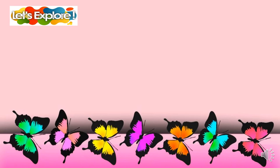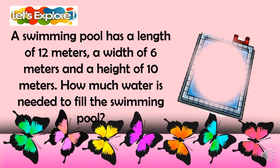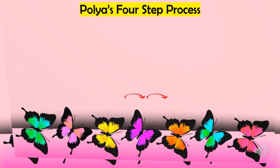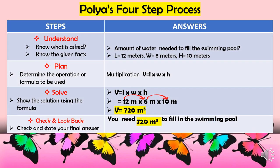Now let us explore more by answering this problem: A swimming pool has a length of 12 meters, a width of 6 meters, and a height of 10 meters. How much water is needed to fill the swimming pool? Using Polya's 4-step process — first, Understand: what is asked is the amount of water needed to fill the pool. The given facts are: length = 12 m, width = 6 m, height = 10 m.